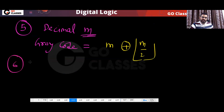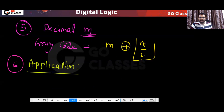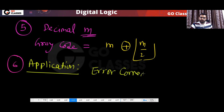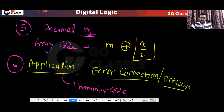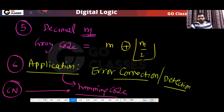The sixth thing — what is the application? In the last class when we were discussing binary code, the application is error detection and error correction. Because there is something called Hamming code, which you will study in the Computer Networks subject. The Hamming code has only one distance — there is one distance.